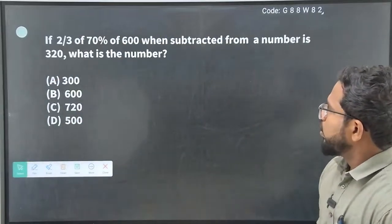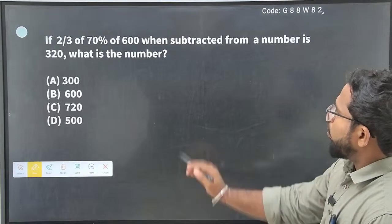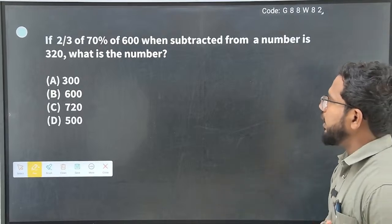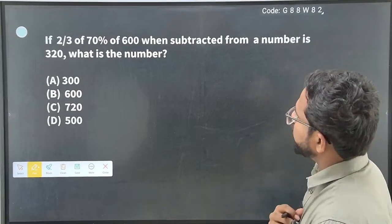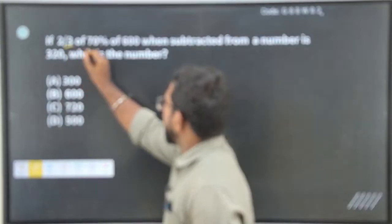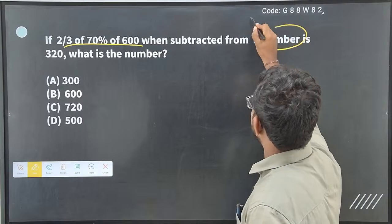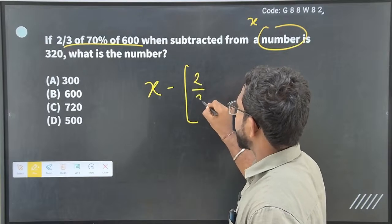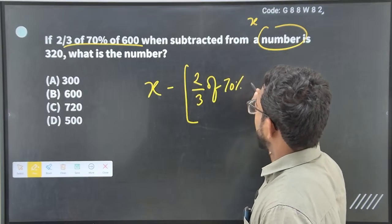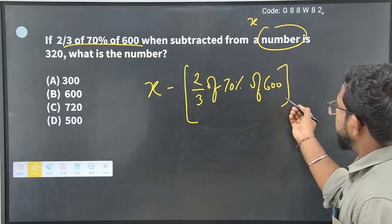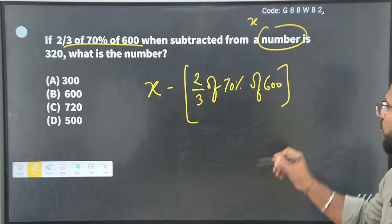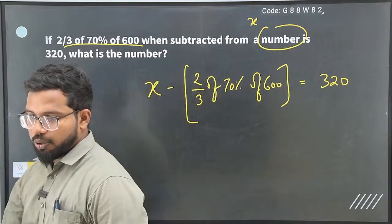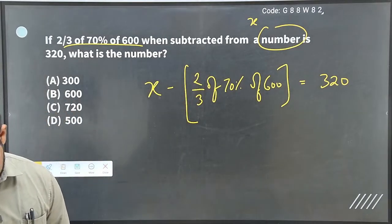Okay, good answering Manish Karthik, SDJS, Jai Raman. Yes, correct answers. Let's move into the next question. If 2 by 3 of 70 percentage of 600 when subtracted from a number, the number is 320, what is the number? Please read the question very carefully. 2 by 3 of 70 percentage of 600 when subtracted from a number, and the number is equal to 320. Okay, so now find the number.